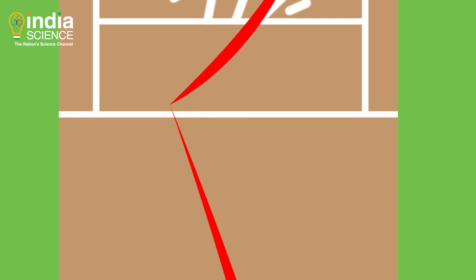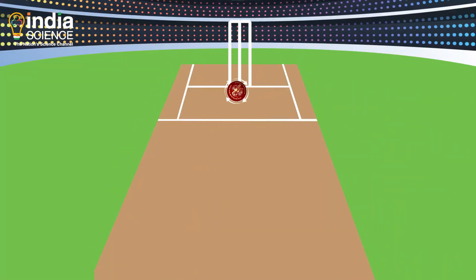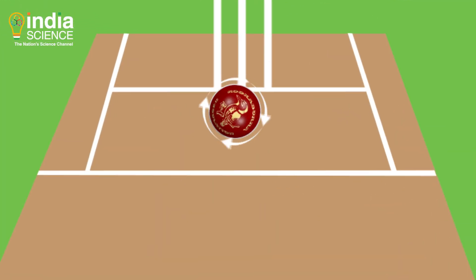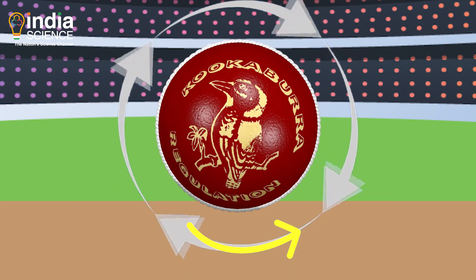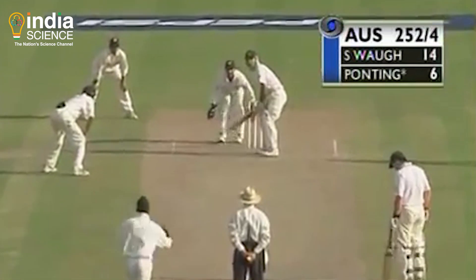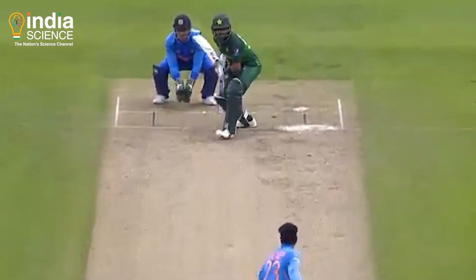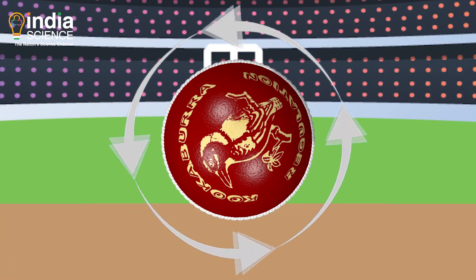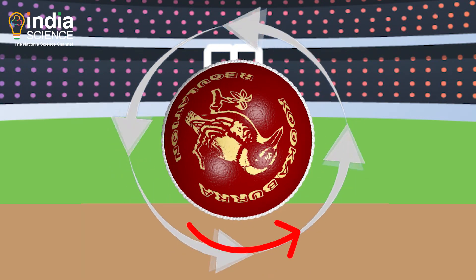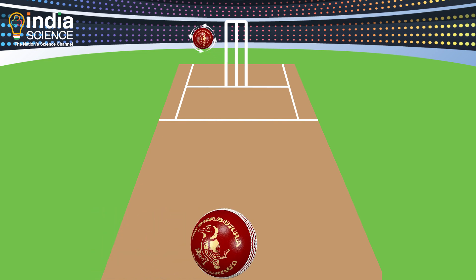Let's first understand how the ball changes its direction after hitting the surface. If a right-arm bowler rotates the ball in a clockwise direction while throwing, the direction of rotation at the downward side of the ball is leftward. When it hits the surface, the surface applies frictional force on it in the opposite direction, i.e. rightwards, making the ball move rightwards. In cricket terminology, this bowler is known as an off-spinner, and if a left-arm bowler bowls this way, he is known as a left-arm chinaman. If a right-arm bowler rotates the ball anticlockwise, then the direction of rotation at the point of contact is rightwards, friction acts in the opposite direction, and hence the ball moves leftwards. This is known as leg spin.